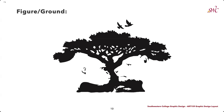Figure-ground ties into this principle and the assignment here as well. It talks about the tendency to simplify a scene into the main object we are looking at — the figure — while everything else becomes the ground. Some people will automatically see the tree and the birds when viewing the Pittsburgh Zoo and Aquarium logo, while others see the gorilla and the lion staring at each other along the bottom.